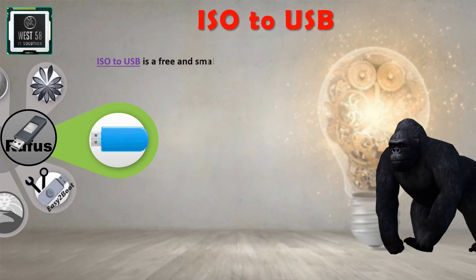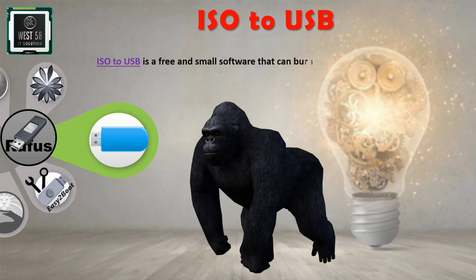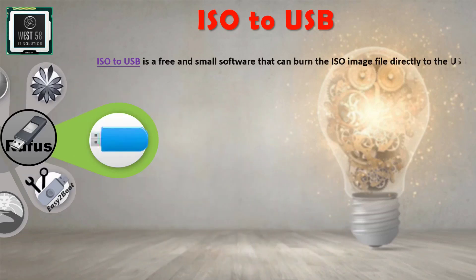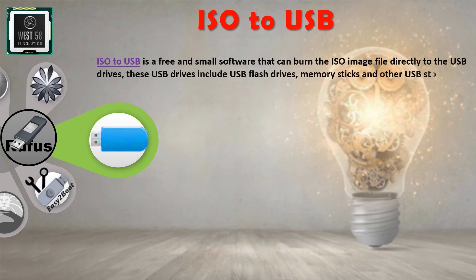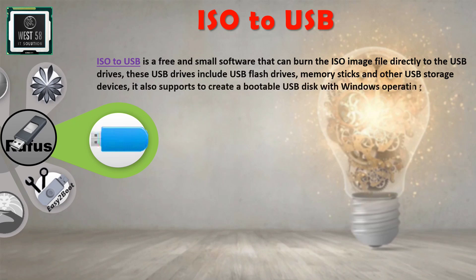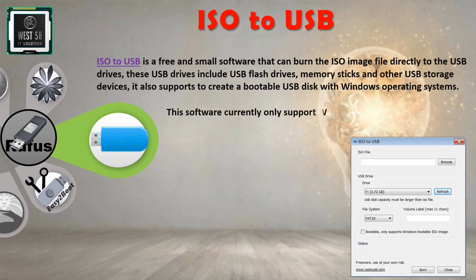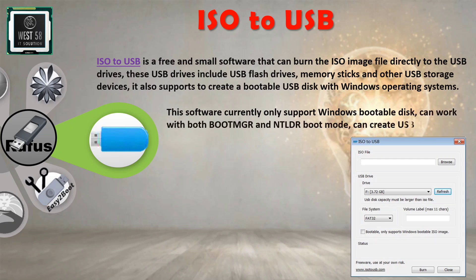ISO to USB is a free and small software that can burn an ISO image file directly to USB drives, including USB flash drives, memory sticks, and other USB storage devices. It also supports creating a bootable USB disk with Windows operating systems. This software currently only supports Windows bootable disks, can work with both BOOTMGR and NTLDR boot modes, and can create USB disks with FAT, FAT32, exFAT, or NTFS file systems.